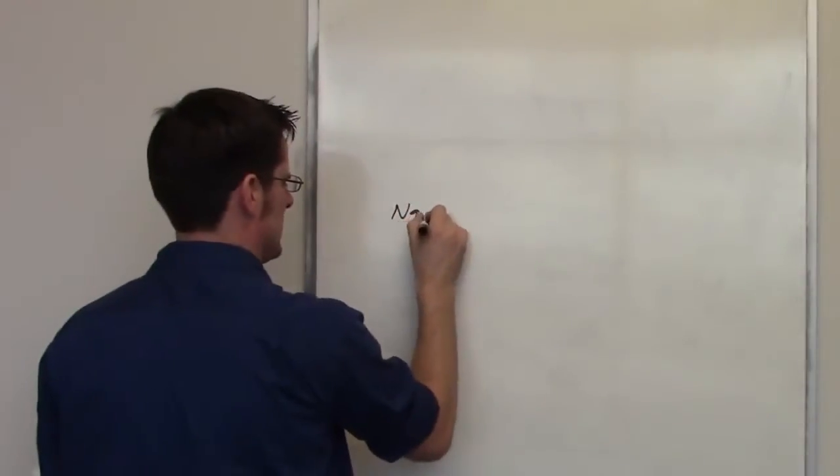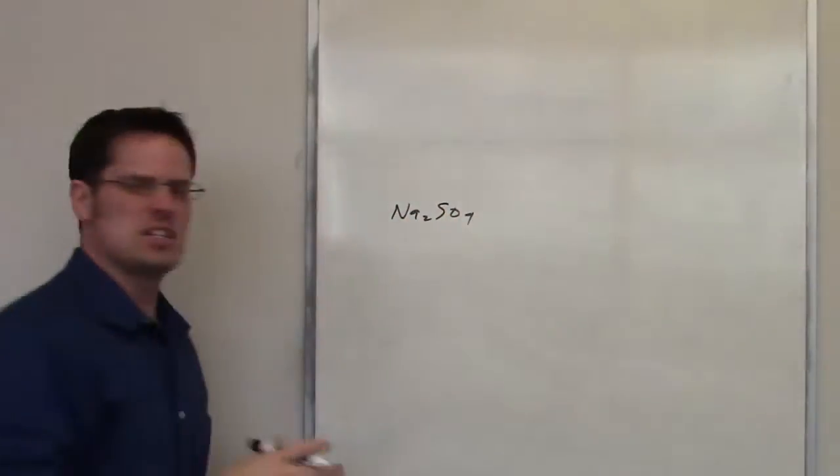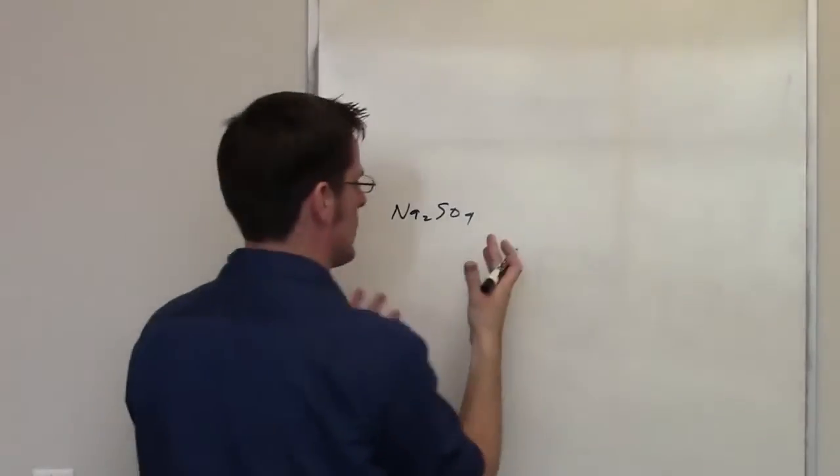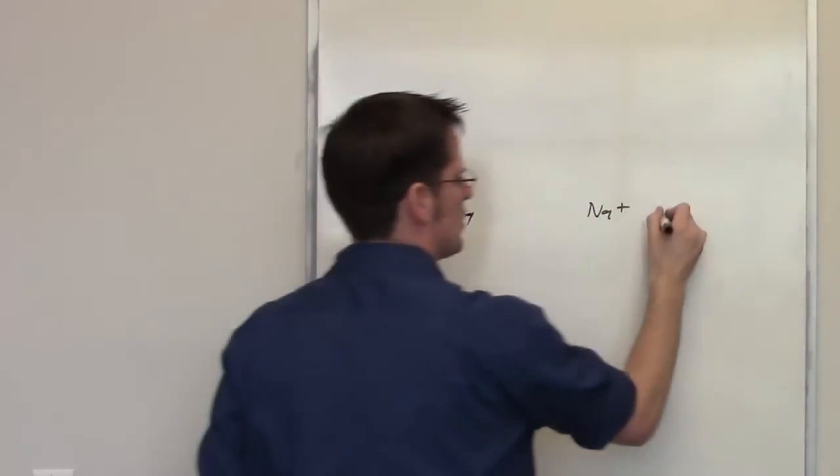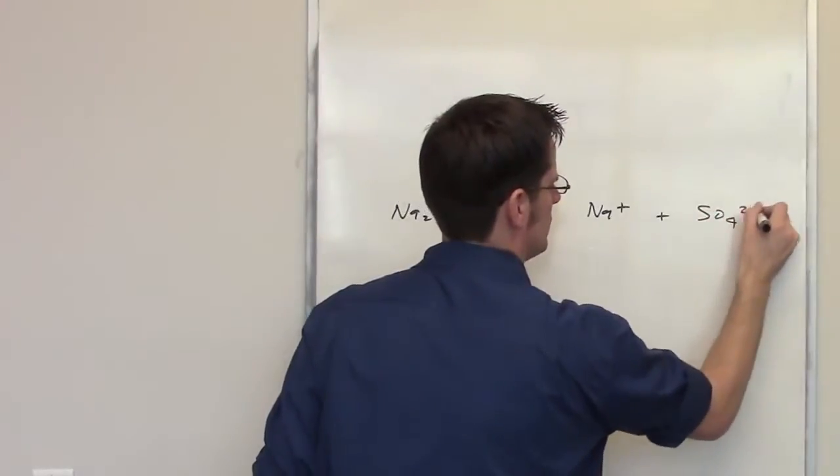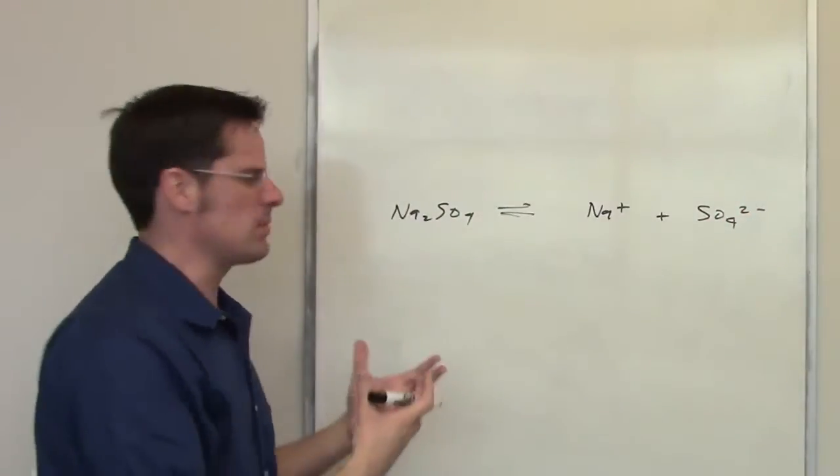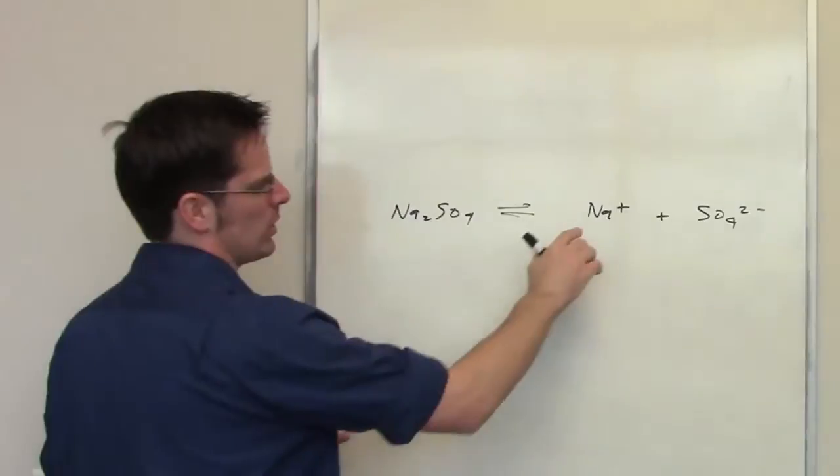Here's sodium sulfate. It's going to dissociate to form ions. What are those ions? Well, one of them is sodium and one of them is sulfate. In this equilibrium reaction, how many molar equivalents of sodium and how many molar equivalents of sulfate am I going to get out of this?